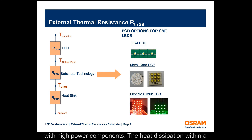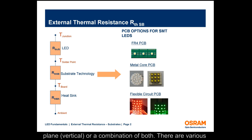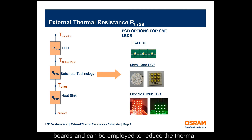The heat dissipation within a printed circuit board is either in-plane or through-plane, or a combination of both. There are various factors that influence the heat conduction in printed circuit boards and can be employed to reduce the thermal resistance of the PCB.